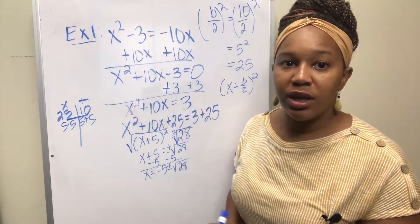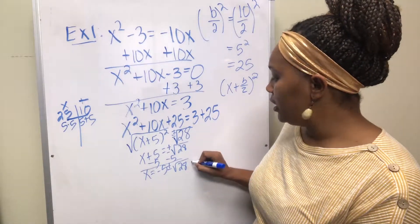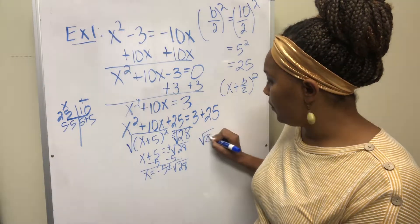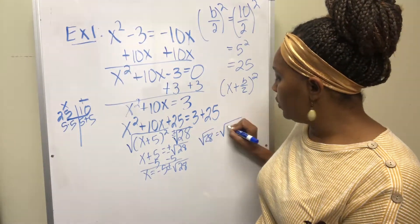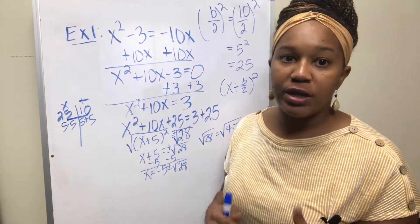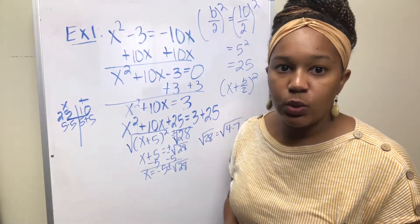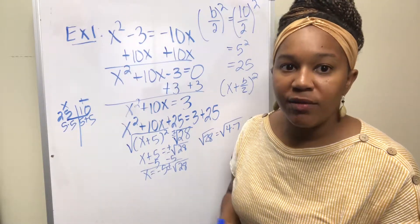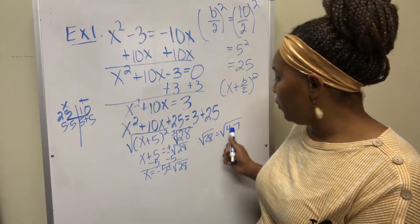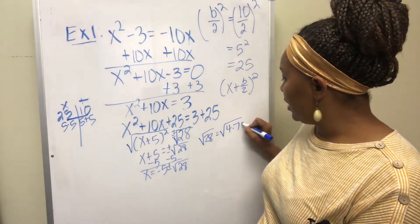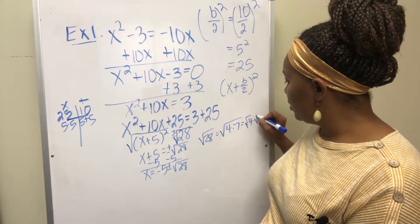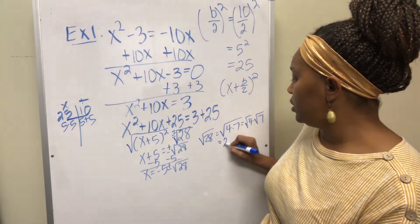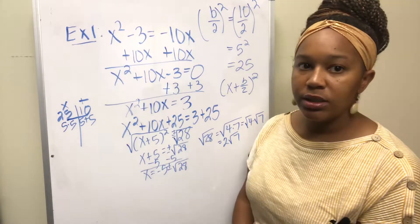Can the square root of 28 be simplified further? Is there a perfect square under the 28? The square root of 28 equals the square root of 4 times 7, which is the same as the square root of 4 times the square root of 7. The square root of 4 is 2, so this equals 2 square root of 7.